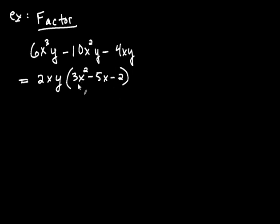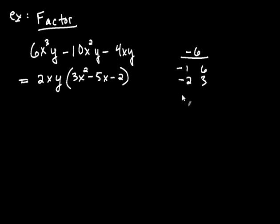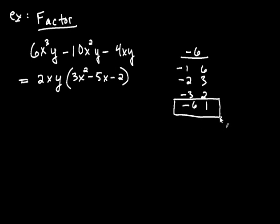The AC method works by multiplying a, which is three, by c, which is negative two, giving negative six. You write that off to the side, then find all integer combinations that multiply to negative six: negative one and positive six; negative two and positive three; negative three and positive two; and negative six and positive one. Which combination adds to negative five? Negative one and positive six gives positive five, so the combination you want is negative six and positive one — they multiply to negative six and add to negative five.